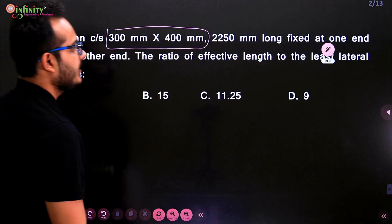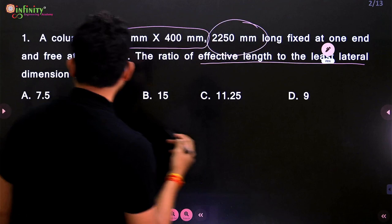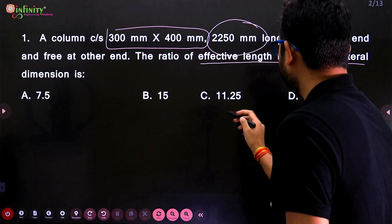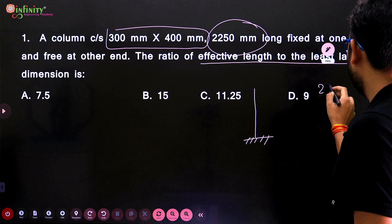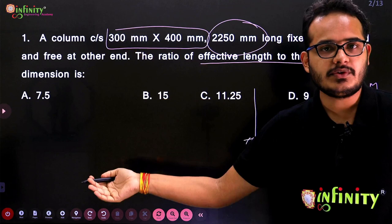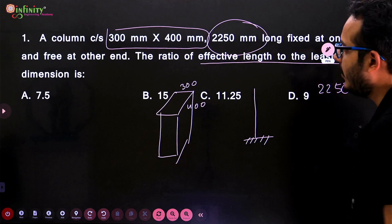The first question: a column cross-section 300 mm × 400 mm, 2250 mm long, fixed at one end and free at the other end. The ratio of effective length to the least lateral dimension is — ? The detail given is that it is fixed from one end and free from the other end, with length 2250 mm and rectangular cross section of 300 × 400 mm.